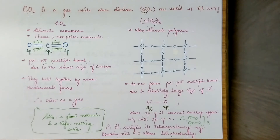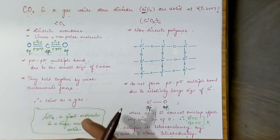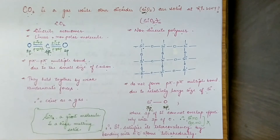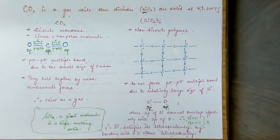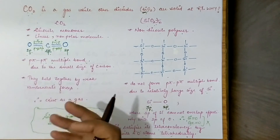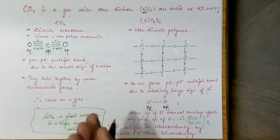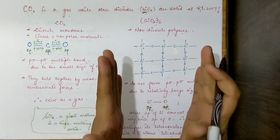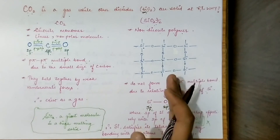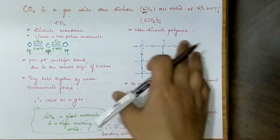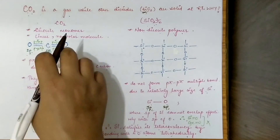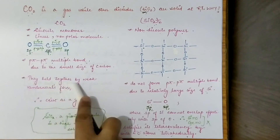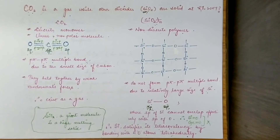Now the answer to our main question becomes clear. Carbon dioxide has a discrete monomeric unit, so its molecular weight is low — just one carbon and two oxygen atoms. Silicon dioxide has many silicon and oxygen atoms in its polymeric structure, giving it a much higher molecular weight and molecular size. The larger the molecular size, the more van der Waals forces of attraction. These non-discrete polymeric units with strong van der Waals forces are solid in nature.